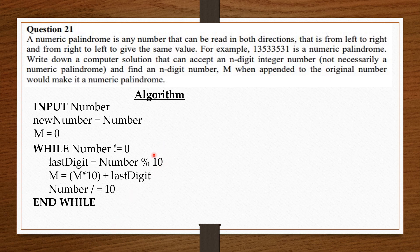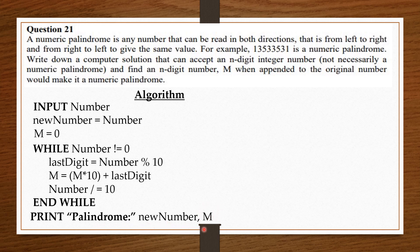In my previous video on reversing numbers, I explained in depth how this while loop reverses a given number. The link is in the description below, and you can also locate it in my playlist. After we've set our while loop which will reverse the number, we can create our palindrome by printing new_number and attaching the reverse number to it. So we say: print palindrome as a string, and then attach the integer value of new_number, then attach the reverse number m to it.